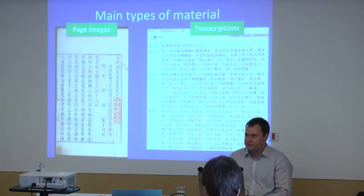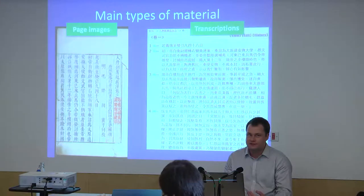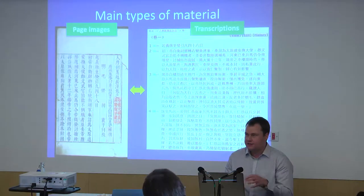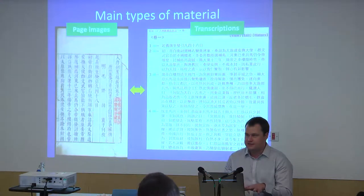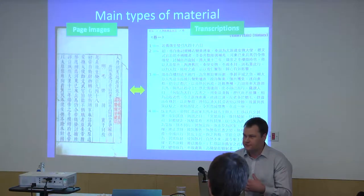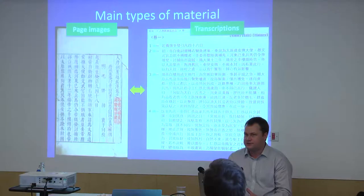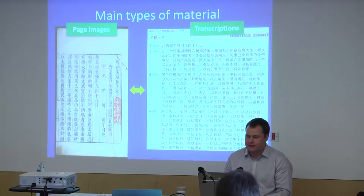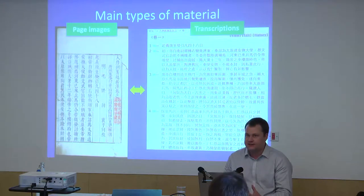The second fundamentally important kind of data we have are transcriptions of this material. In most cases, like in this example, these two representations are linked together within the system, so you can have full-text search using the transcription, or work with the transcription as your primary way of interacting with the text, but also refer back to the authoritative scanned image data to confirm exactly how this looked in this particular edition.